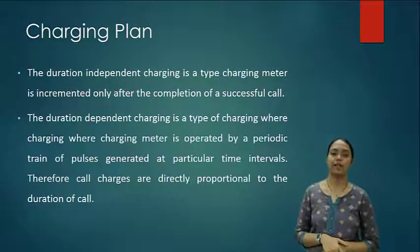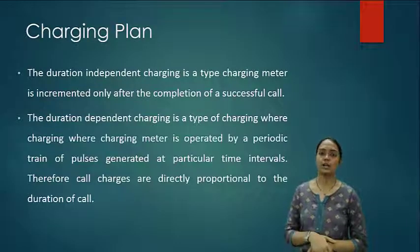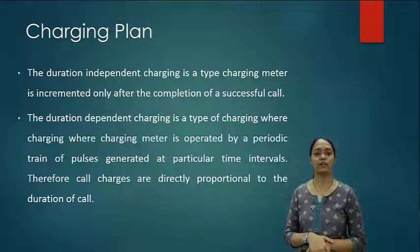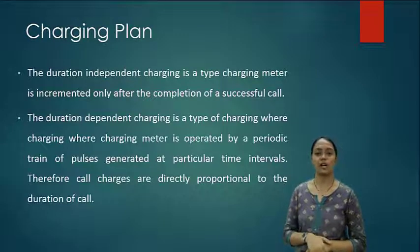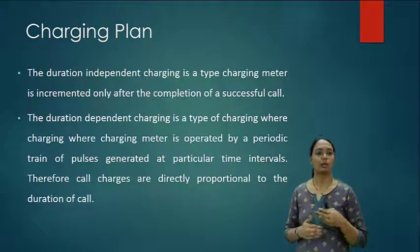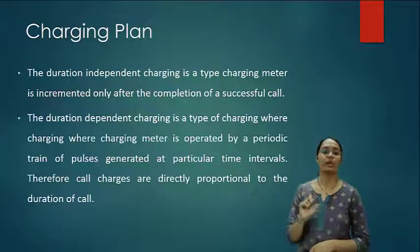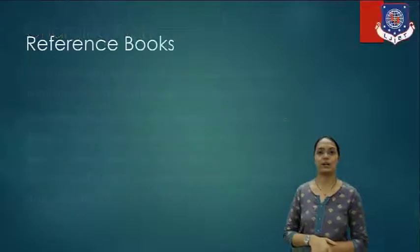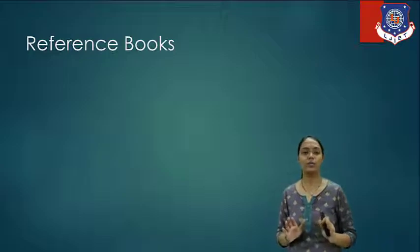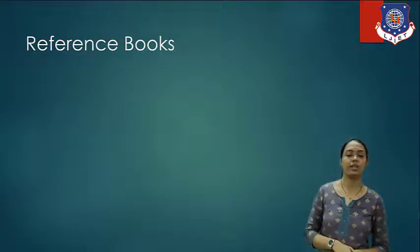These are the different types of charging plan based on the user's requirement. Duration independent charging is a type where the charging meter is incremented only after the completion of a successful call. Duration dependent charging is where the meter is operated by a periodic train of pulses generated at particular time intervals, so call charges are directly proportional to the duration of the call. For example, 1 rupee per minute is a duration dependent charging plan.